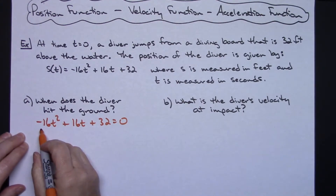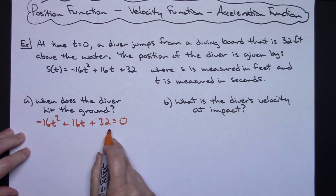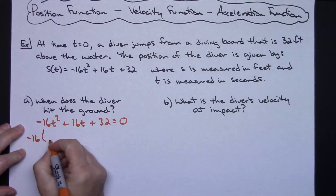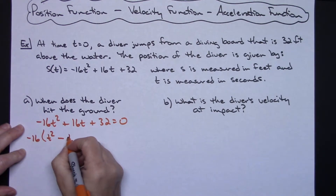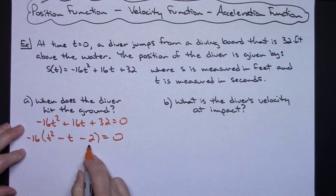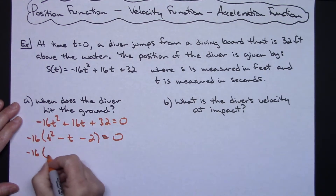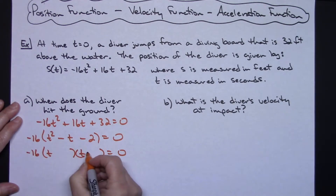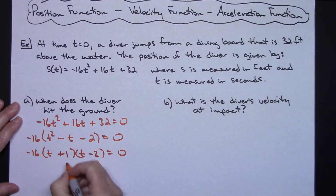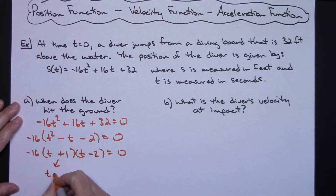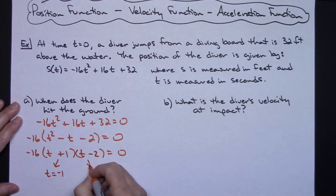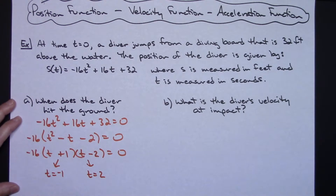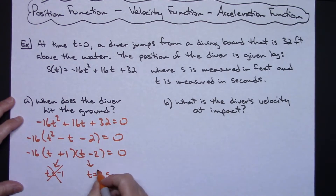There's a leading negative coefficient, so I'll factor out negative 16 to make it easier. That leaves me with t squared minus t minus 2 inside. Factoring that trinomial: two things that multiply to negative 2 and add to negative 1 would be negative 2 and positive 1. Setting this equal to zero gives possible answers of t equals negative 1 or t equals 2. Obviously time can't be negative, so the diver hits the ground after 2 seconds.